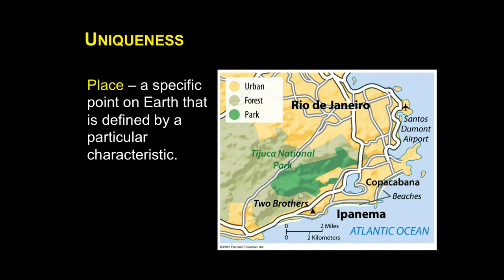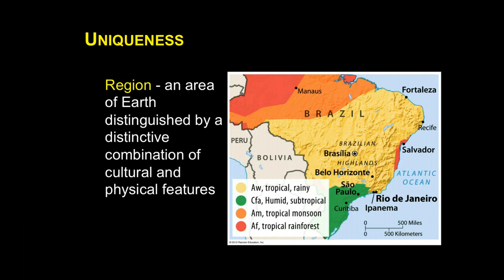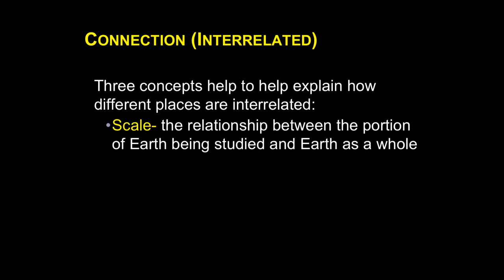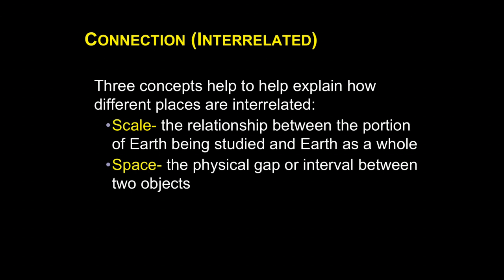Region is a broader context — a combination of cultural and physical features that identify a place, generally covering multiple points that share commonalities giving a sense of region. If we look at the types of climate found in Brazil, you see distinctive regions based on climate — the more tropical AW climate characterized by lots of rainfall and high temperatures, and different variations throughout the country creating identifiable regions with similar patterns. Scale refers to the relationship between one part of the earth versus the entire thing, which becomes very important in the conclusions a geographer might draw.